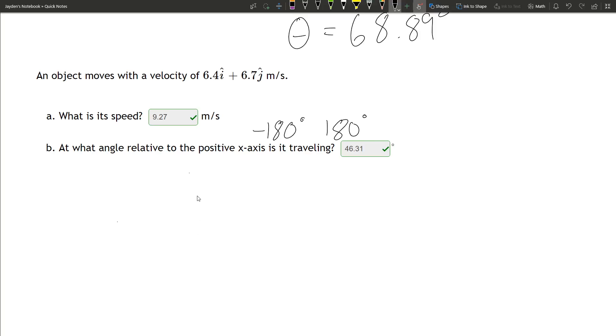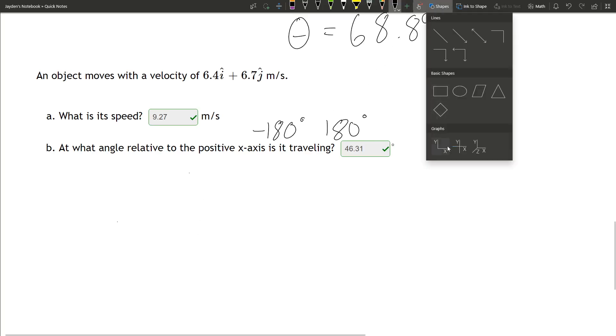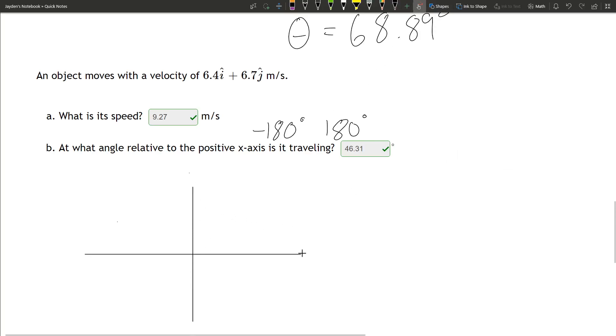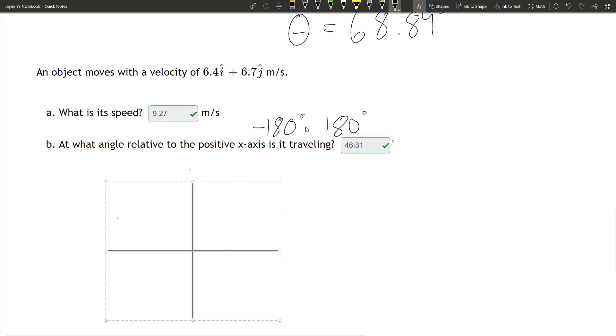Right here we see a vector that goes around 6.4 in the i direction and 6.7 in j direction. This is the velocity vector.